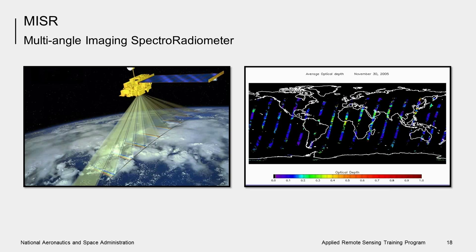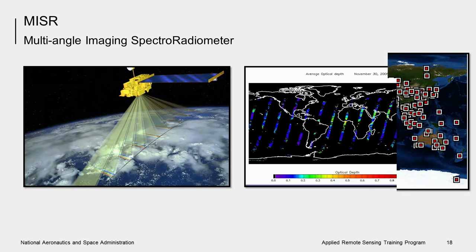MISR is a Multi-angle Imaging SpectroRadiometer onboard the Terra satellite. MISR makes measurements in four spectral channels and nine different viewing angles, a unique characteristic of this sensor. Due to these angular measurements, MISR can provide additional information on aerosol type — for example, scattering versus absorbing — aerosol size, and for some cases, aerosol height. The accuracy of the MISR AOD product is equivalent or higher than that of MODIS. However, a major limitation of MISR is its daily coverage — due to the narrow swath width, MISR takes about eight to nine days to cover the entire globe, which can be a limiting factor for day-to-day air quality monitoring.